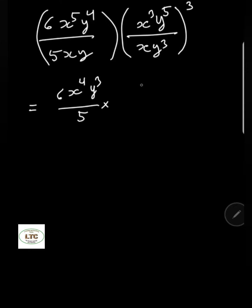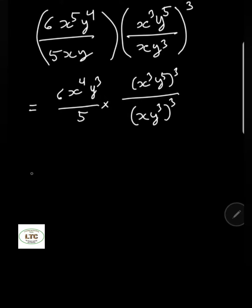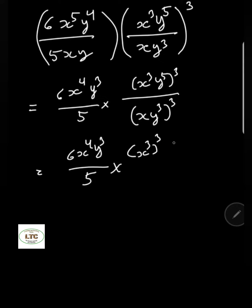In the second bracket, by the power of a quotient rule, the exponent 3 goes to the numerator: x to the power of 3, y to the power of 5, and the exponent 3 goes to the denominator also. Now, by the power of a product rule, exponent 3 goes to the first factor x to the power of 3 and second factor y to the power of 5. In the denominator also, the power of 3 goes to the first factor x and also the second factor y to the power of 3.